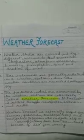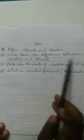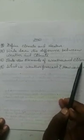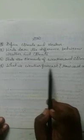Based on these two topics, there are some homework questions. Number one: define climate and weather. Number two: write down the difference between weather and climate. Number three: state the elements of weather and climate. Number four: what is weather forecast and how is it useful? When you go through these two topics — weather and climate, and weather forecast — these four questions will be easy to answer. Please write all the questions in your fair notebook. Till then, bye.